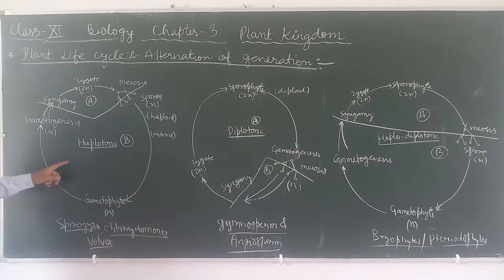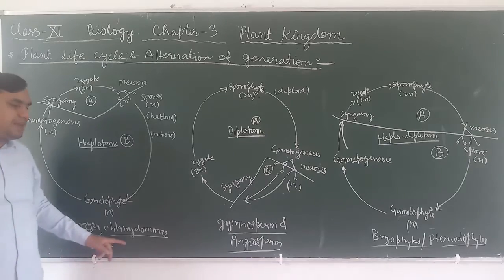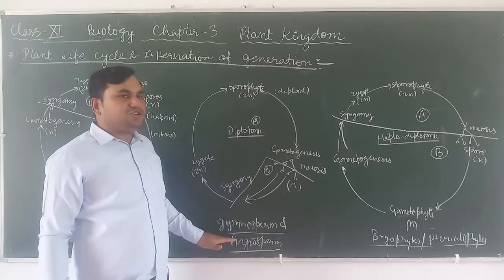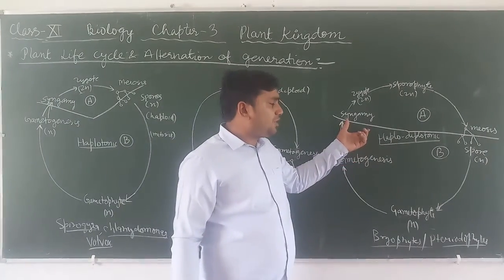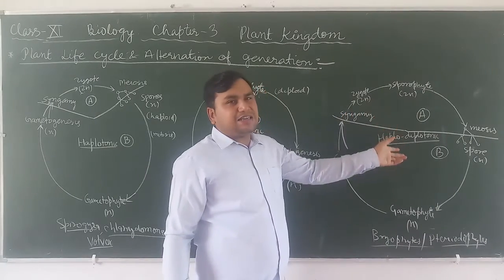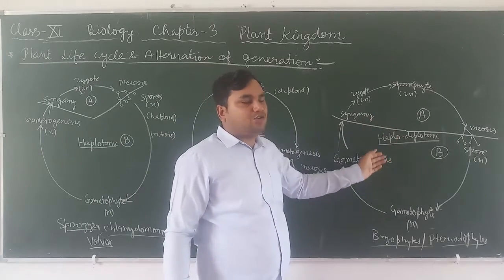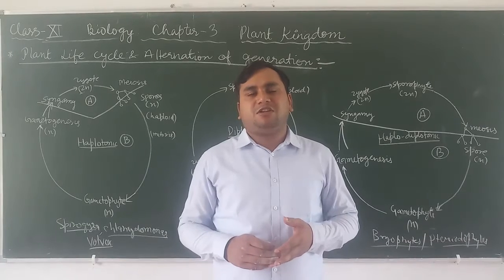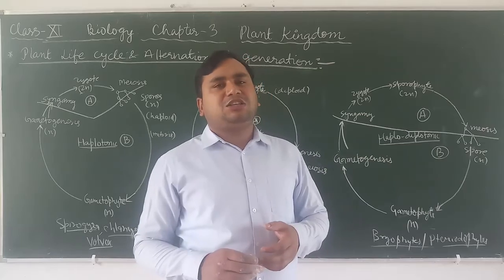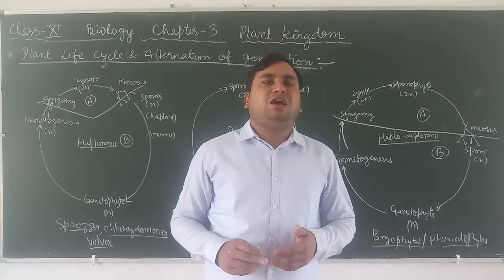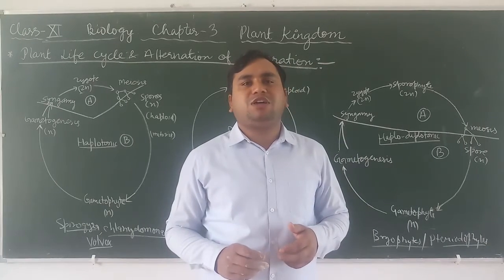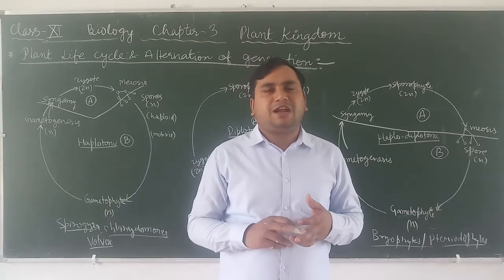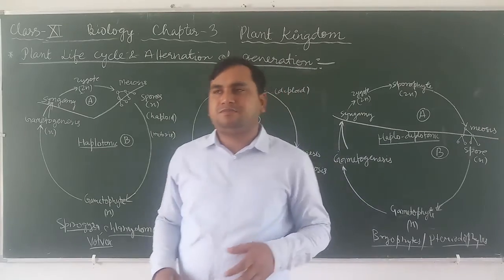The haplontic life cycle — haploid to haploid chain — mainly occurs in Spirogyra, Chlamydomonas, and Volvox. The diplontic life cycle — diploid chain into haploid — occurs only in gymnosperms and angiosperms. The haplo-diplontic life cycle pattern, where haploid and diploid alternate with each other, is shown in bryophytes and pteridophytes. This concludes Chapter 3: Plant Kingdom, covering algae, bryophyta, pteridophyta, gymnosperm, and angiosperm, along with their characteristic features, uses, and the three life cycle patterns: haplontic, diplontic, and haplo-diplontic.